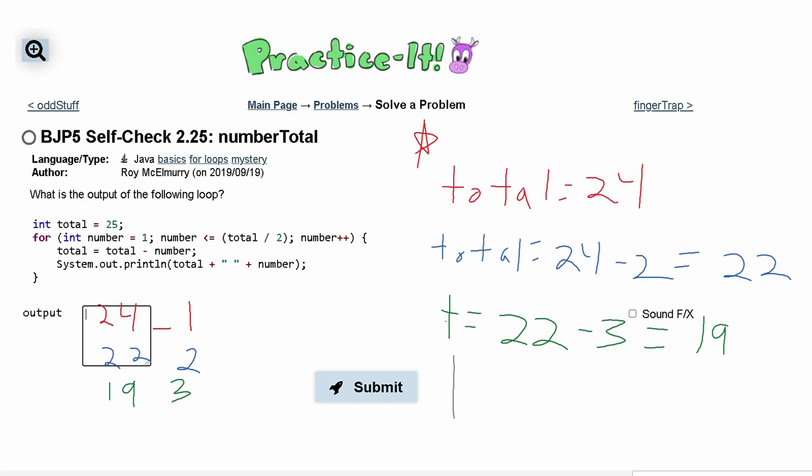We're going to say t, now we're back in our loop. We're going to say t equals total which is 19 currently minus number which now is 4. And that's going to give us 15. So we are going to print 15 space number and the number is 4.